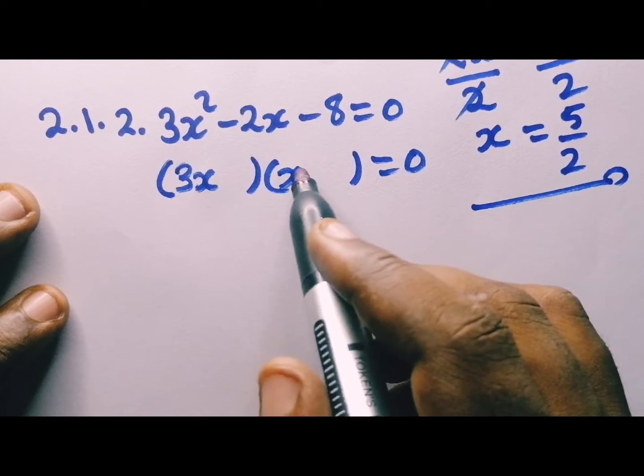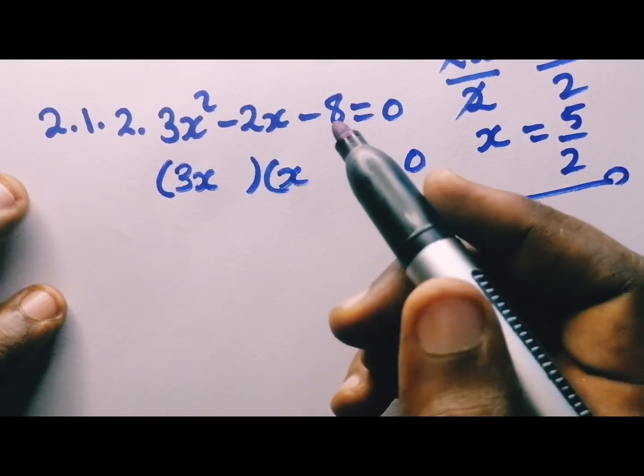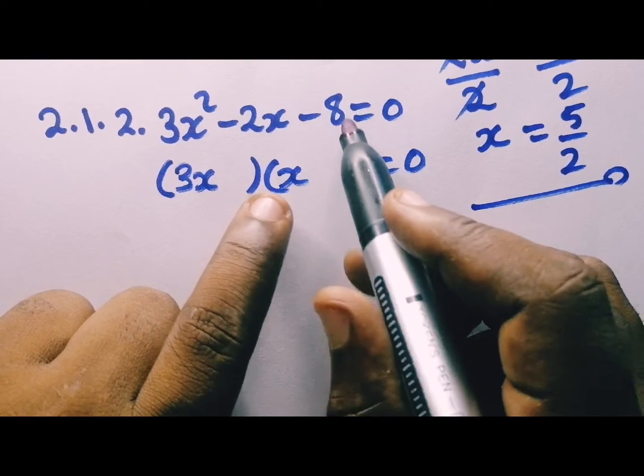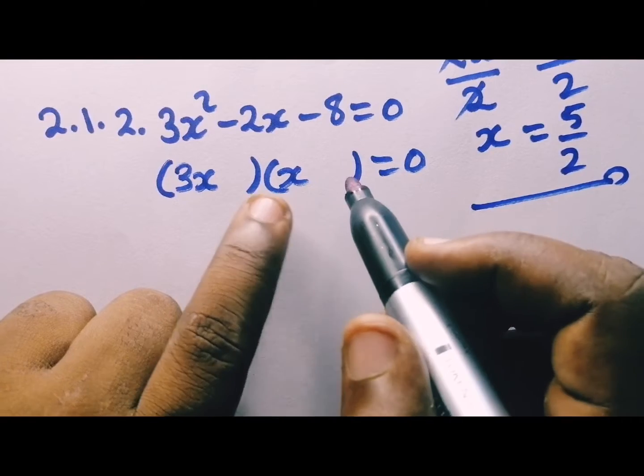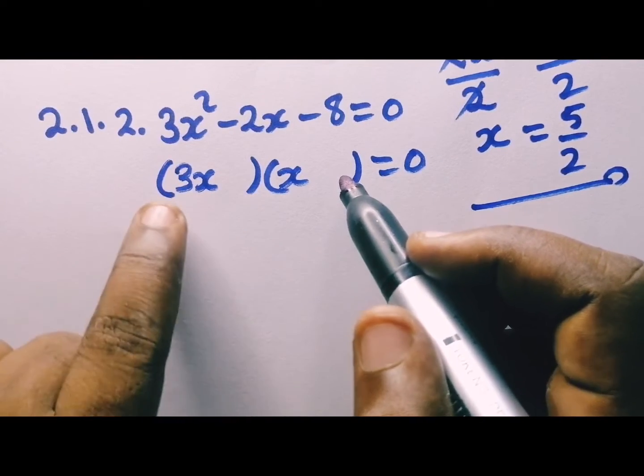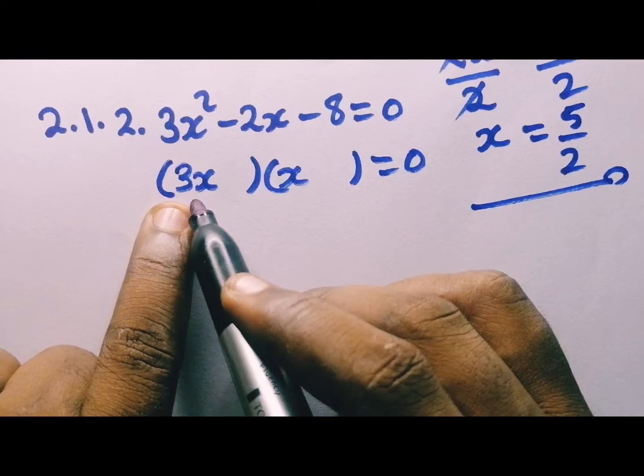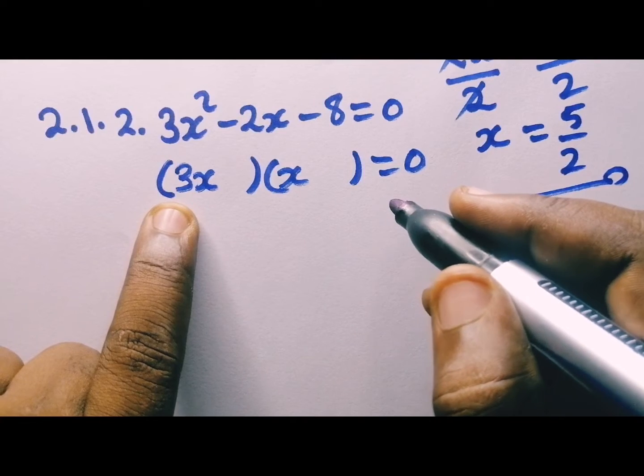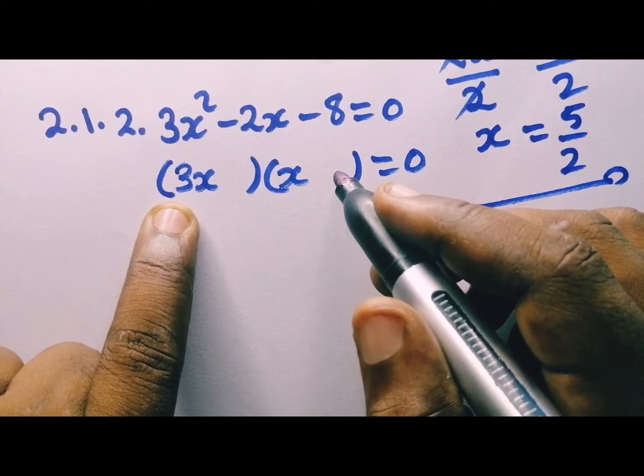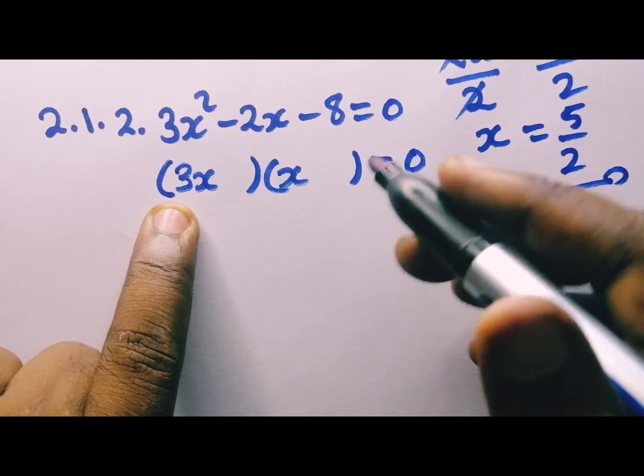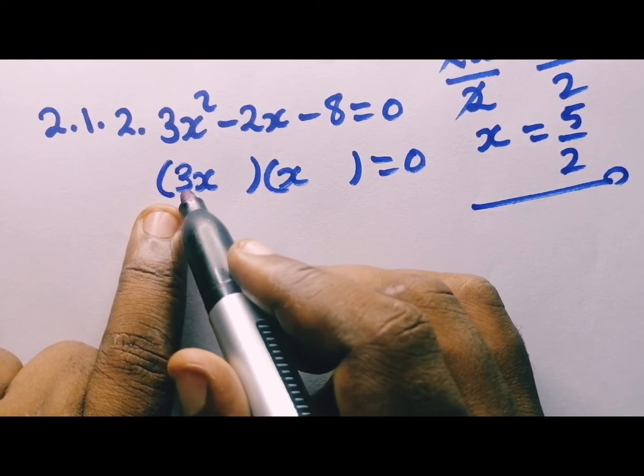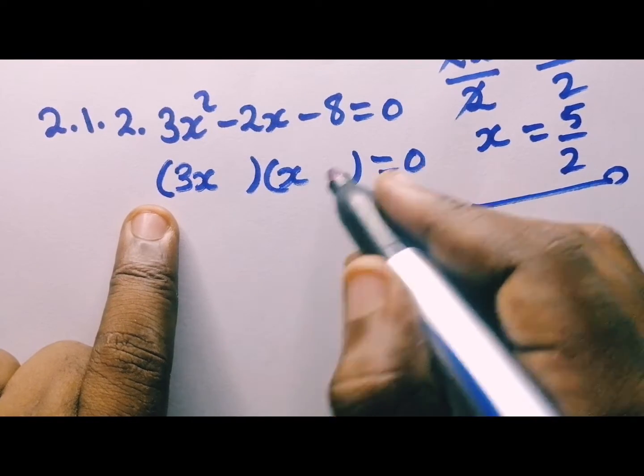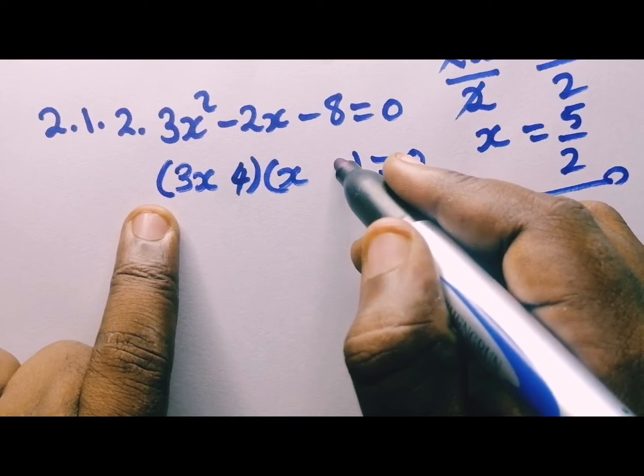So 3x times x is going to give you 3x squared. What do I put here? In this case, you need to know the factors which are correct for you. But because we have this number here in front of x, this is going to be different. So we are going to use 4 times 2. But you need to be careful where do you put your 4 and where do you put your 2. Let me say we put 2 here and we put 4, and then we put 2.